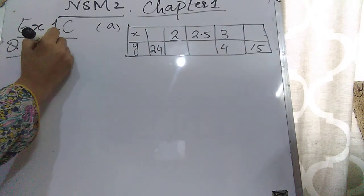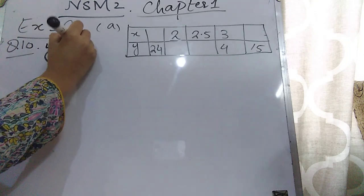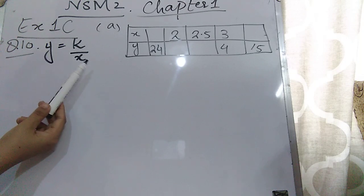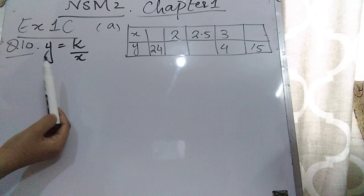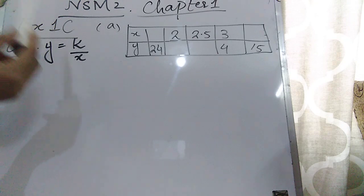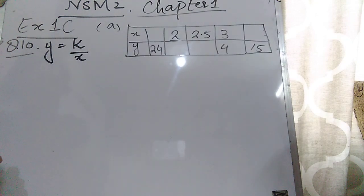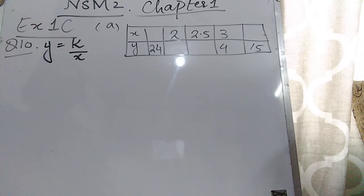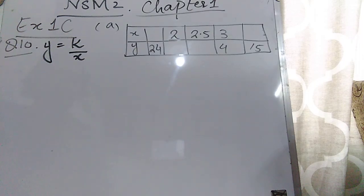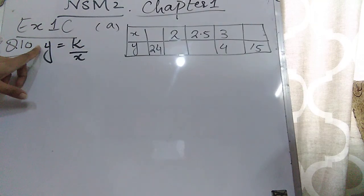Since y is inversely proportional to x, your equation will be y = k/x. Remember that in direct proportion you write y = kx, but in inverse proportion you write y = k/x, where k is our constant. The very first step, whether it's direct or inverse proportion, is that you have to find out the value of k to make an equation.